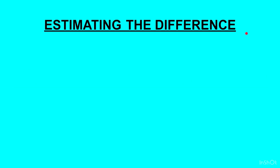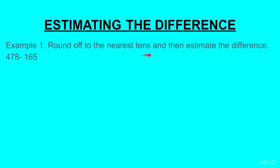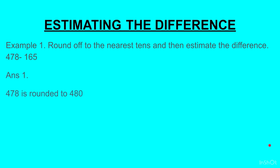Estimating the difference — let us take an example. Round off to the nearest tens and then estimate the difference: 478 minus 165. First we will round off 478. We have to round to the nearest tens, so we will look at the ones place. We have 8; 8 is more than 5, so we will round off to the upper limit.